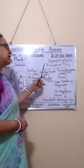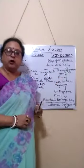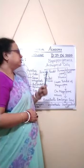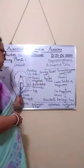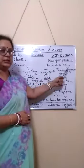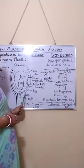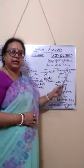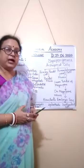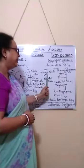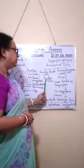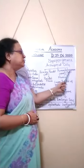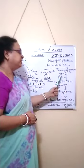We discuss about the megasporogenesis or the formation of the female gametophyte. In most cases, one cell appears — the archesporial cell — which appears at the micropylar end. Sometimes this archesporial cell acts as the megaspore mother cell. Sometimes it divides into two: one is the primary parietal cell, which gives the parietal tissue, and the second one, the primary sporogenous cell, acts as the megaspore mother cell.